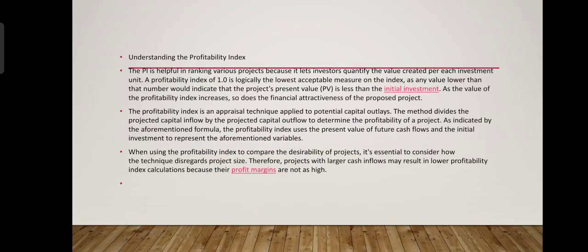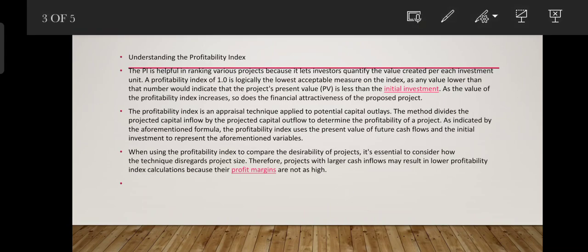Understanding profitability index: it helps in ranking various projects because it lets investors quantify the value created per unit of investment. A profitability index value of 1 is logically the lowest acceptable measure on the index, as any value lower than 1 would indicate that the project's present value is less than the initial investment.